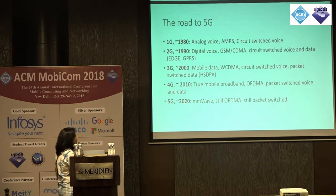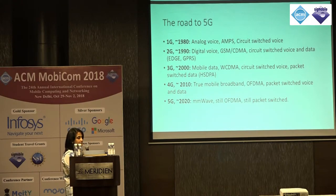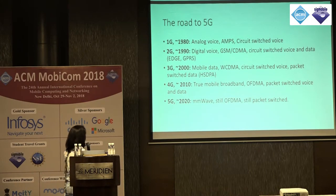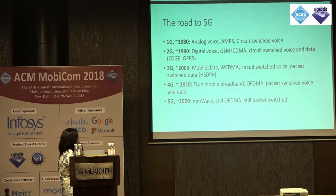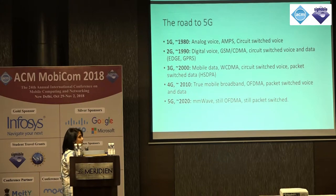2G came along in 1990, and that was when people went back and labeled the prior system as 1G. 2G was really more about digital voice — that's where CDMA and GSM came in, with circuit switched voice and data. Data was still circuit switched at that time, so you had systems like EDGE and GPRS, which were sort of 2.5 or 2.75G. That took you to 3G, which was quite a departure because data was now packet switched.